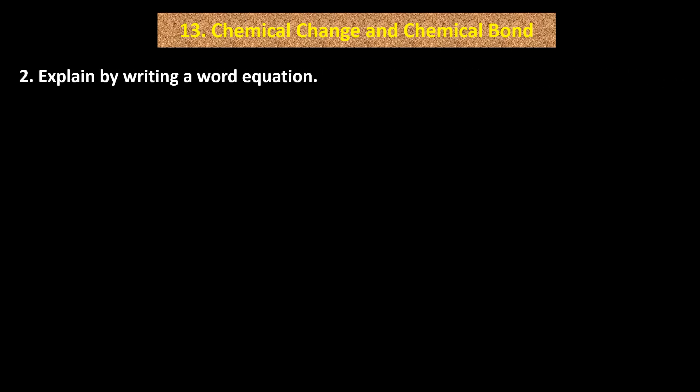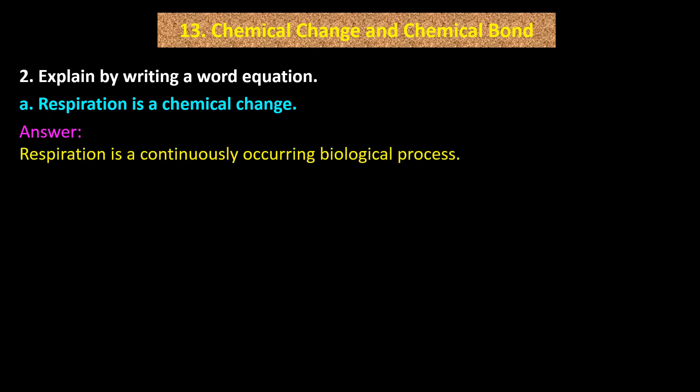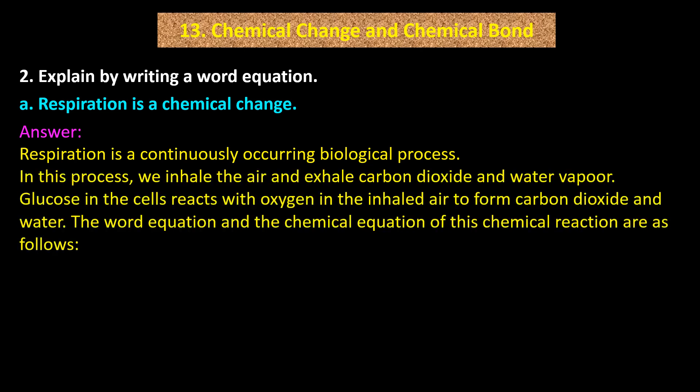Question number 2. Explain by writing a word equation. A: Respiration is a chemical change. Answer: Respiration is a continuously occurring biological process. In this process, we inhale air and exhale carbon dioxide and water vapor.